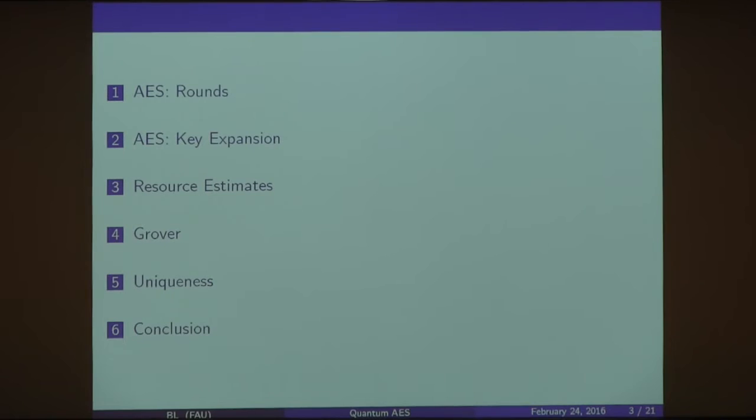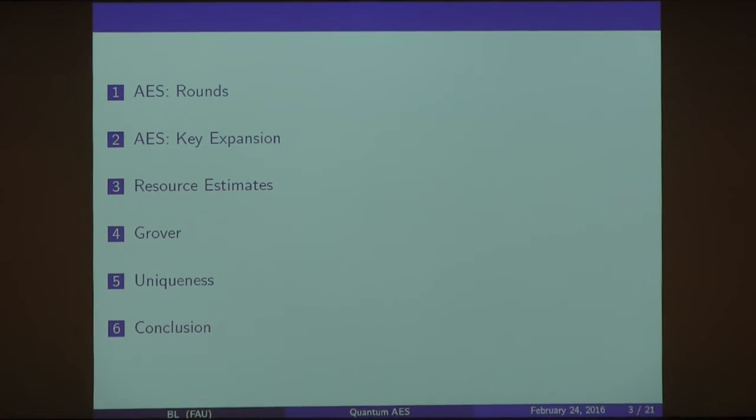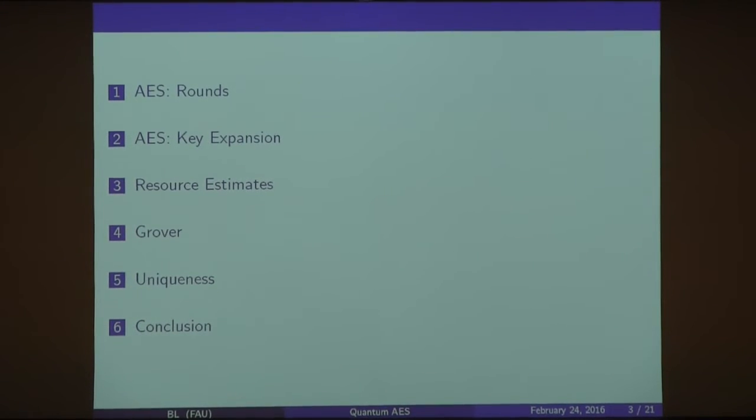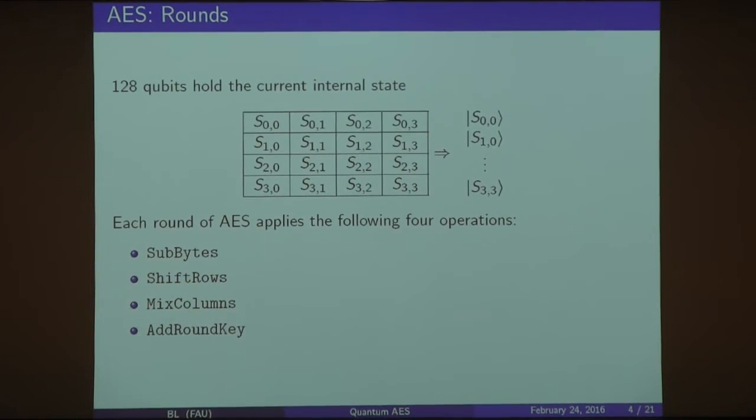Through there, we found the resource estimates for how to compute each round of AES, the resource estimates for the key expansion, as well as applying this to Grover's algorithm, checking for uniqueness, and then finally having our total number of gates and circuit size and complexity from there.